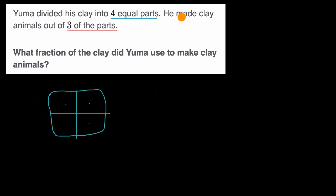Now it says that he made clay animals out of three of the parts. So maybe this part right over here, he was able to make a clay animal out of. This part right over here, he made a clay animal out of. And then that part right over there, he made a clay animal out of. So what fraction of the clay did he use to make clay animals?